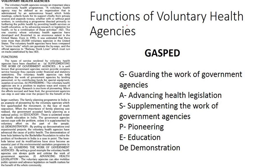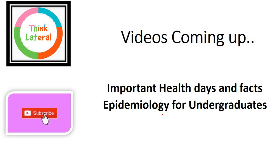For functions of voluntary health agencies, the mnemonic is GASPED: G = Guarding the work of government agencies, A = Advancing health legislation, S = Supplementing the work of government agencies, P = Pioneering, E = Education, D = Demonstration. This is GASPED for functions of voluntary health agencies.